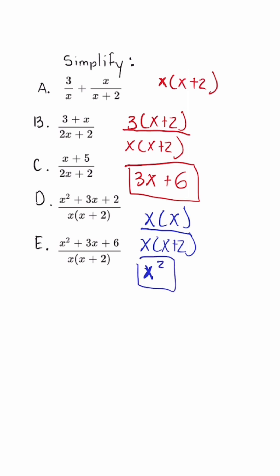So if we want to simplify this now, we have x squared plus 3x plus 6 all over our common denominator, which is x times x plus 2.